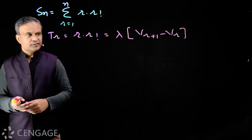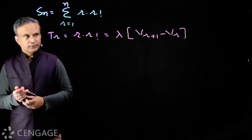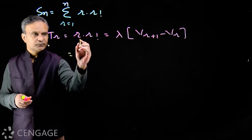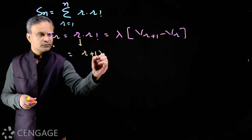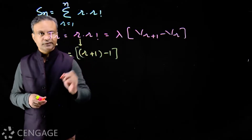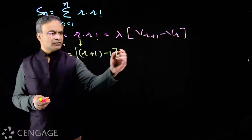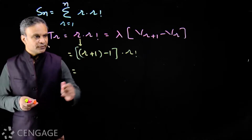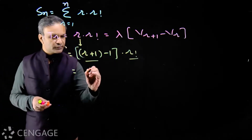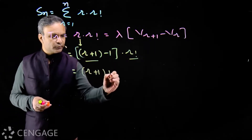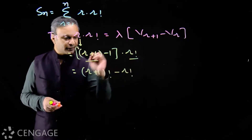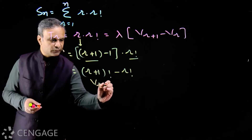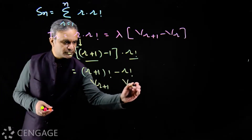Using the concepts of factorial notation, we can write r as (r+1) minus 1. So we have this multiplied by r factorial. Now r+1 into r factorial is (r+1) factorial. So we have (r+1) factorial minus r factorial.